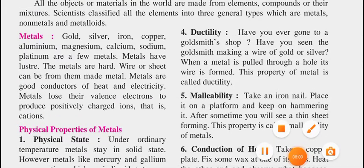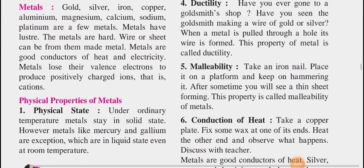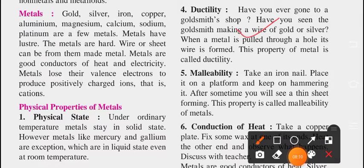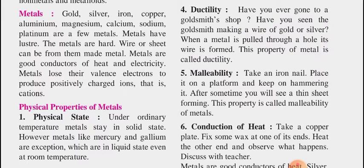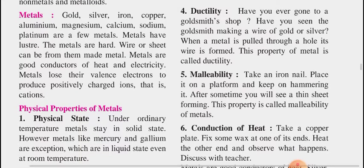The next property is ductility. Have you ever gone to a goldsmith's shop and seen them making a wire of gold or silver? When a metal is pulled through a hole, its wire is formed. This property of metal is called ductility. From gold, we make ornaments — the jeweller makes a very long thin wire from gold and forms chains from the same.